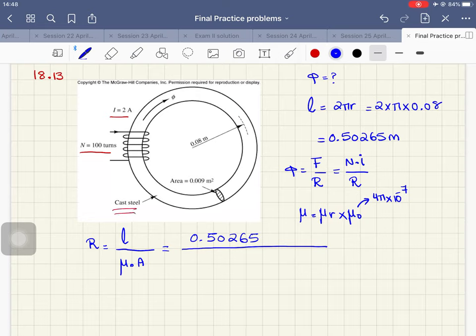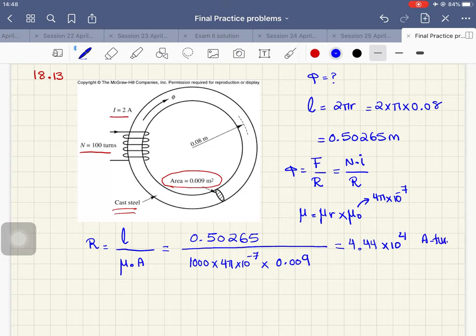So here, mu r, the relative permeability of cast steel, is equal to 1000. This multiplied by the permeability of the air. So it's 4 pi multiplied by 10 to the negative 7 multiplied by the cross sectional area of this structure. So you can see here, we have the cross sectional area at 0.009 square meter. So 0.009.